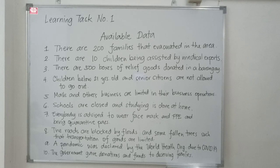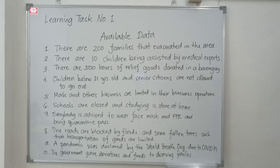Number four: children below 21 years old and senior citizens are not allowed to go out. Number five: malls and other businesses are limited in their business operations. Number six: schools are closed and studying is done at home.